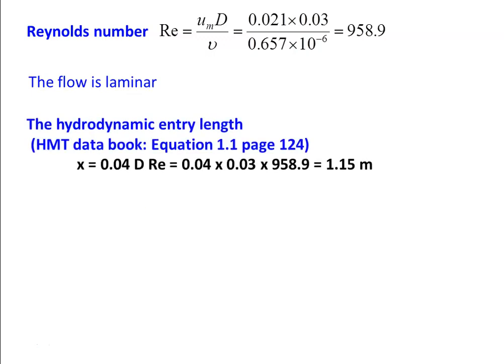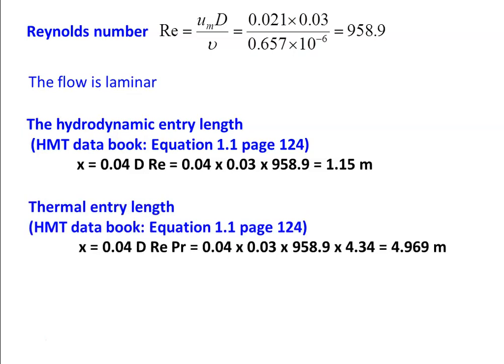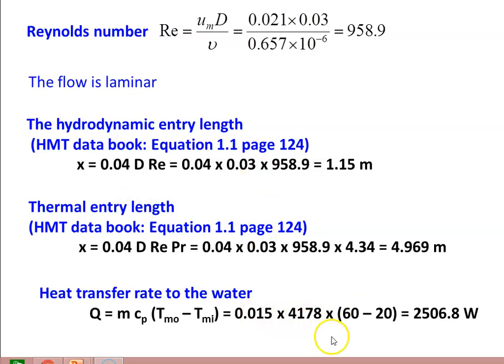The hydrodynamic entry length for laminar flow, from data book equation 1.1, page 124: x = 0.04 × D × Re = 0.04 × 0.03 × 958.9 = 1.15 m. The heat transfer rate to the water: Q = m·Cp·(TMo − TMi) = 0.015 × 4178 × (60 − 20) = 2506.8 W.